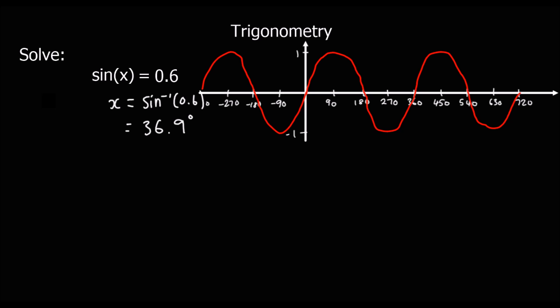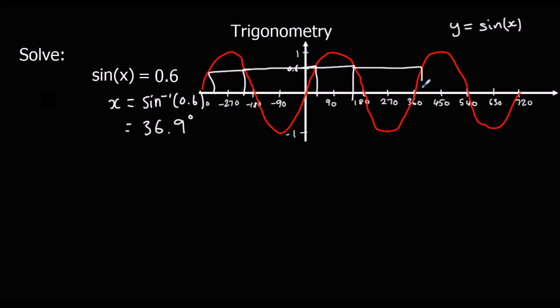The calculator only gives you one answer. So where is sin x = 0.6 on the graph? Here we've got the graph of y = sin x and you can see it's 0.6 here, which is our first answer, but it's also 0.6 here, or here, or here — there's actually an infinite number of values that x could take that would give us 0.6.